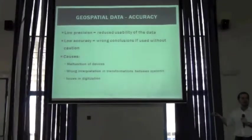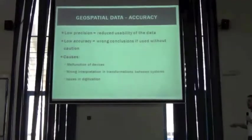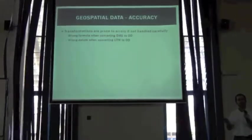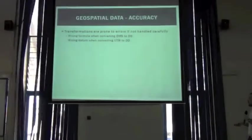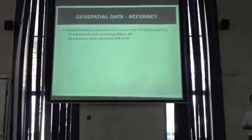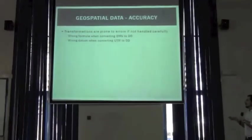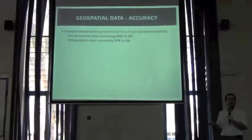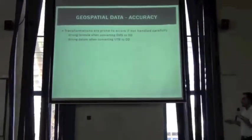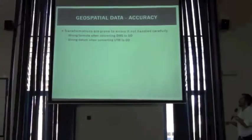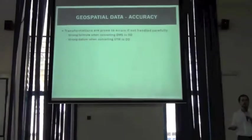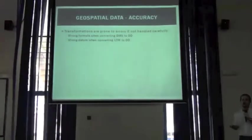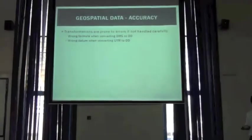We will focus on transformations and digitization, because device malfunction we cannot control. Transformations, changing coordinates from one system to another for geo-referencing localities, can cause problems if not handled carefully. These transformations can range from simple conversions like degree-minute-seconds to decimal degrees, to very complicated formulas when changing from UTM to decimal degrees. If we miss the datum or the UTM zone, we might end up with inaccurate geospatial information.